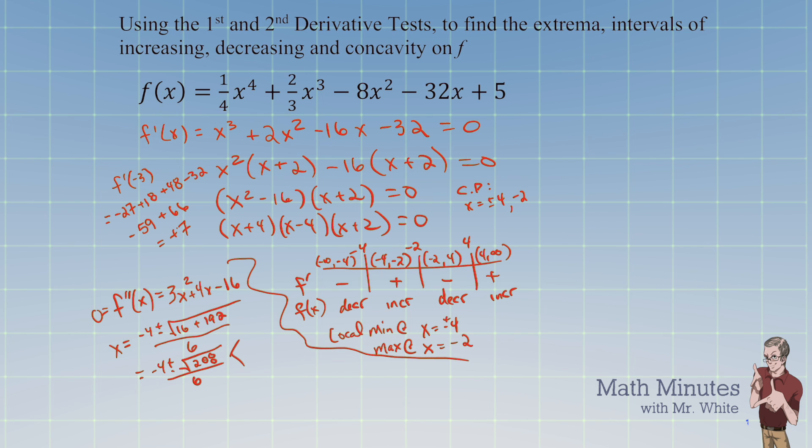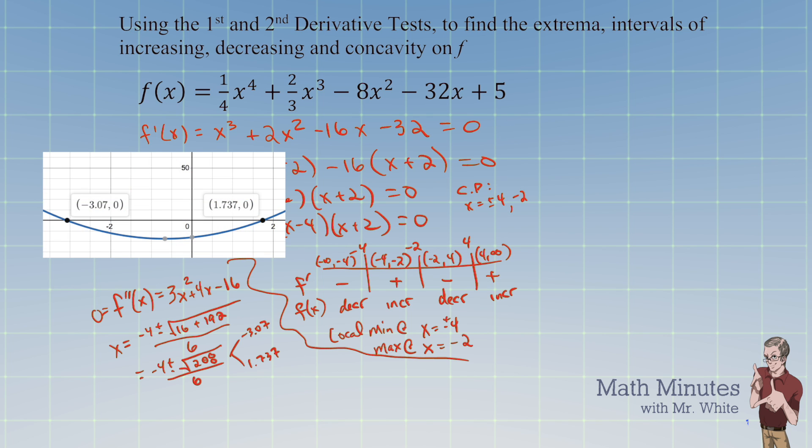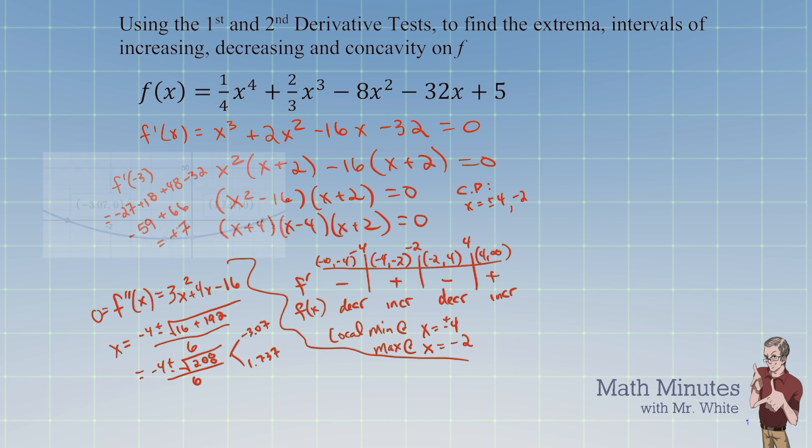If you plug this in the calculator, what you get is negative 3.07 and 1.737. And here, take a look at the graph that I put into Desmos. You can see where the zeros are on that second derivative. So that's another way that you can determine those decimals.